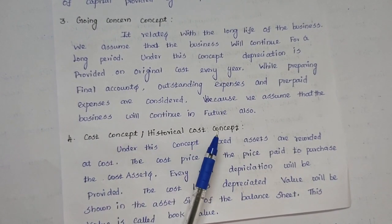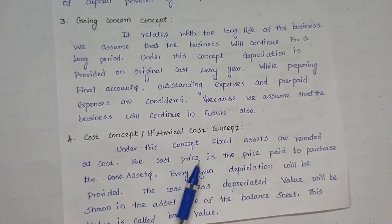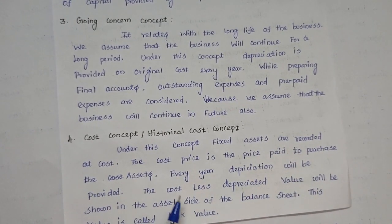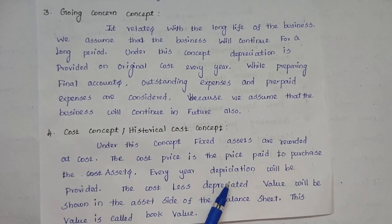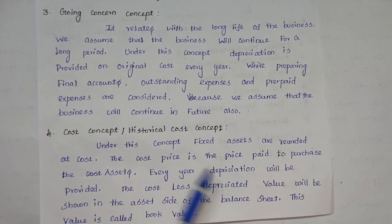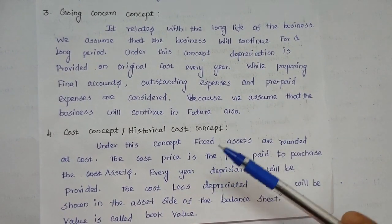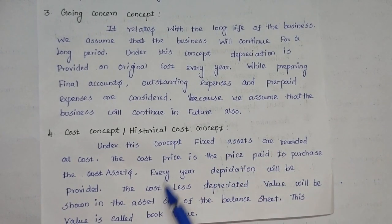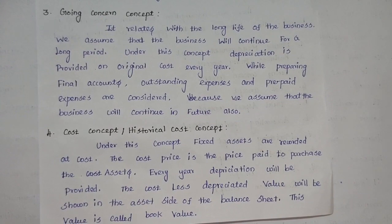The fourth concept is the cost concept, also called the historical cost concept. Under this concept, fixed assets are recorded at cost. The cost price is the price paid to purchase the asset. Every year, depreciation will be provided. The cost less accumulated depreciation — the net value — will be shown on the asset side of the balance sheet. This value is called book value. Every year, the asset's original cost value is reduced by depreciation.